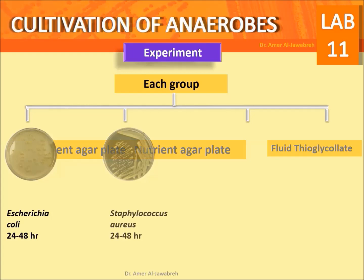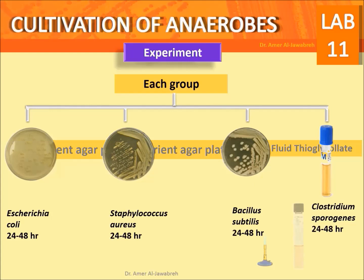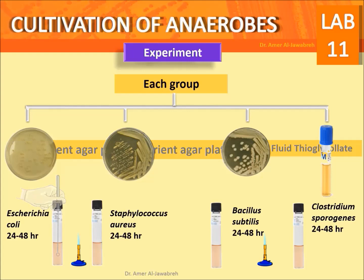For each group, provide three nutrient agar plates: first containing Escherichia coli, second containing Staphylococcus aureus, and third containing Bacillus subtilis. Provide one fluid thioglycolate medium containing Clostridium sporogenes. Aseptically inoculate the FTM down to the bottom and incubate at 37°C for 24 to 48 hours.